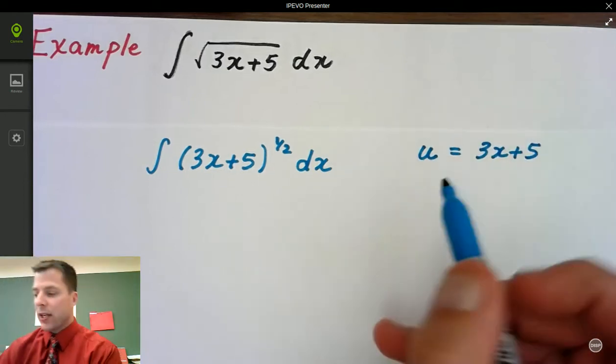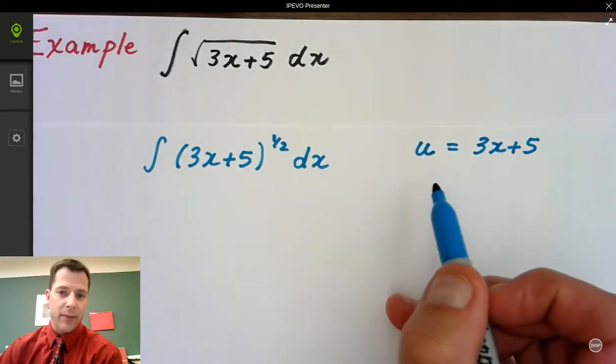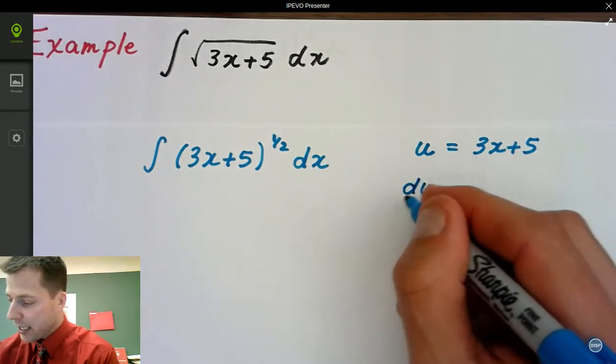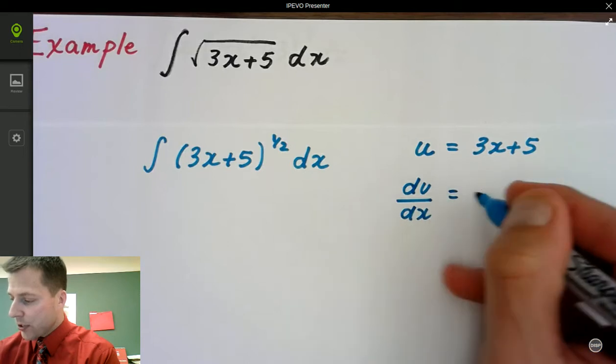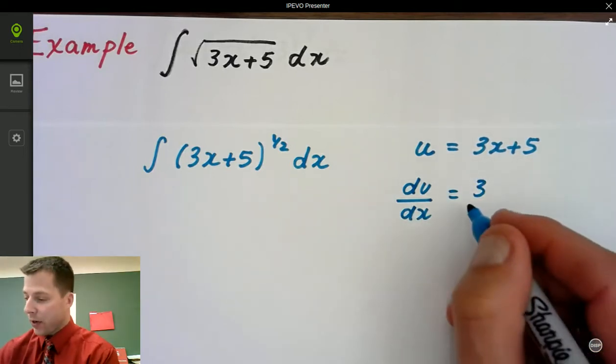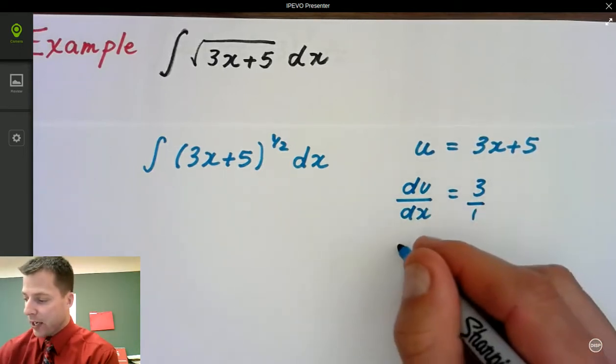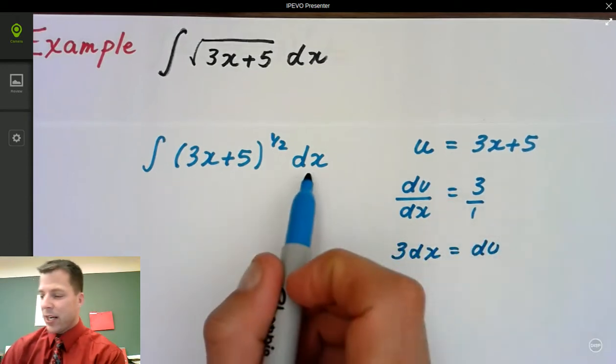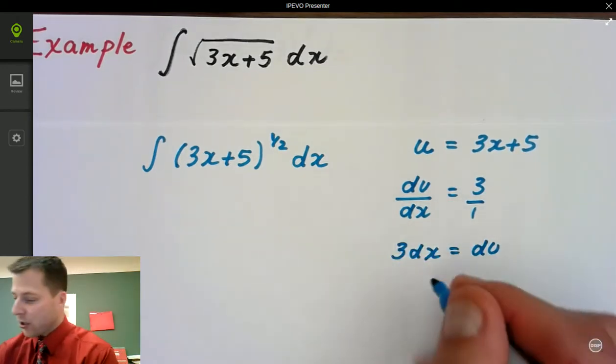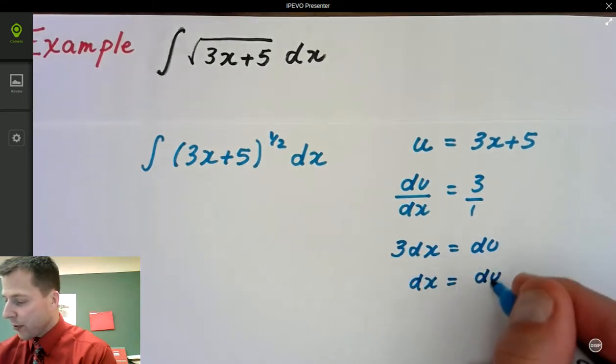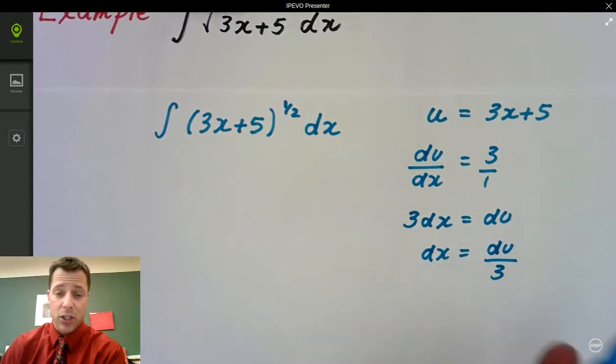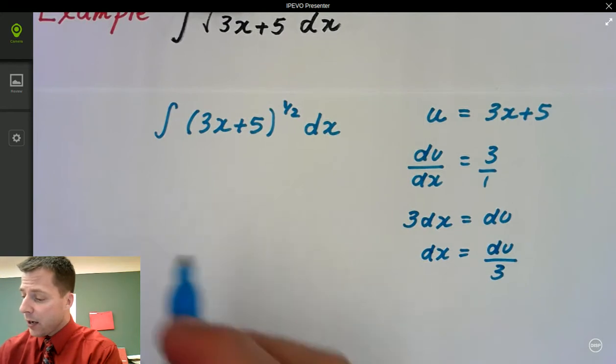And my u-value is going to be 3x plus 5. Now, I'm only going to do this once. I'm going to differentiate here and I'm going to end up solving for dx, so watch what I do. So I'm going to say du/dx is equal to 3. Pretty simple. If I wanted to cross multiply, I get 3dx equals du, but I want dx. I want to solve for dx, so dx equals du over 3. I always solve for dx. You can do it different ways, but I always do this method and it just depends on who your teacher is.